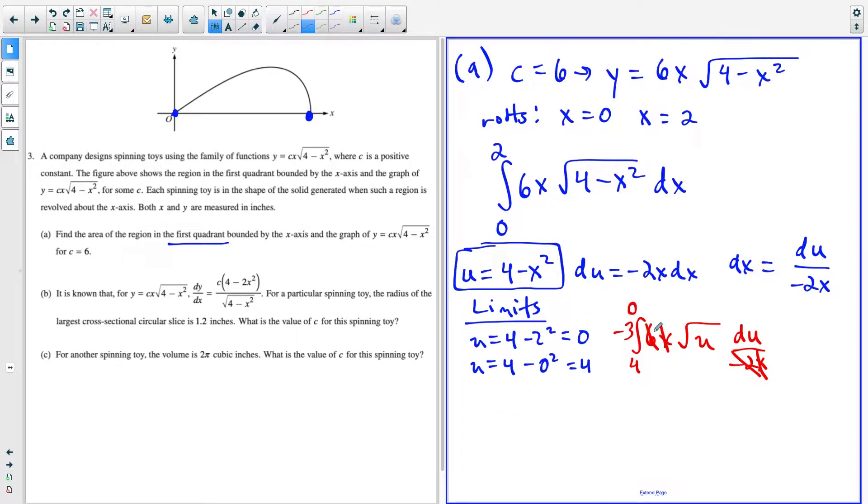So now a few changes we can make. The negative three, it'd be nice if it was positive, and we could make it positive if we switch the limits of integration. So I can write this as positive three times the integral from zero to four. And now instead of radical u, we're going to call this u to the one half du.